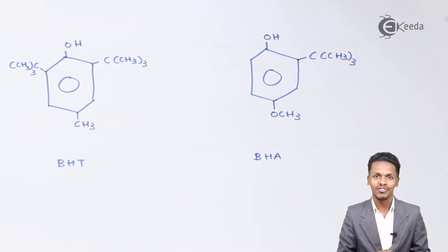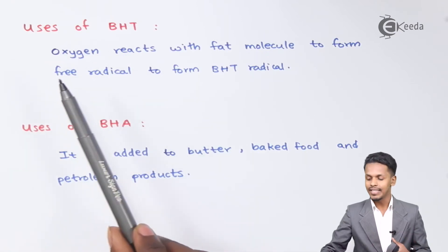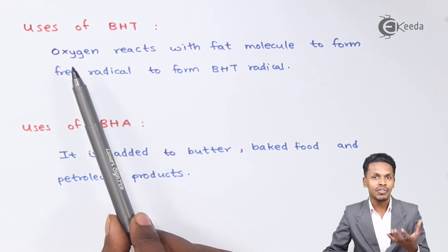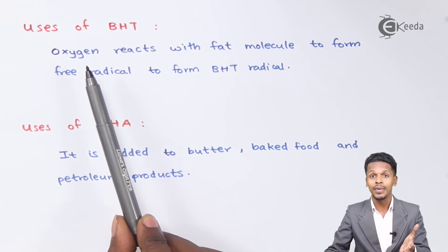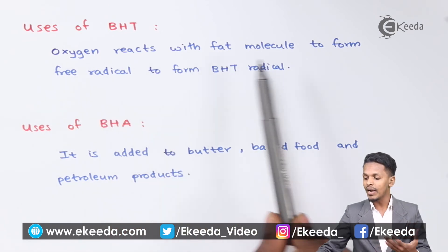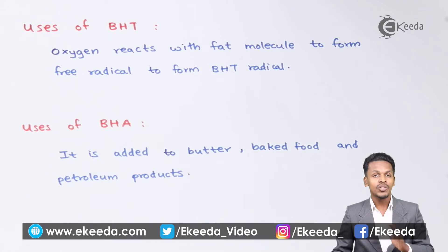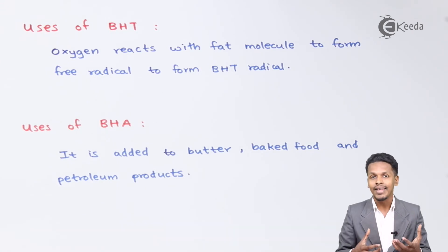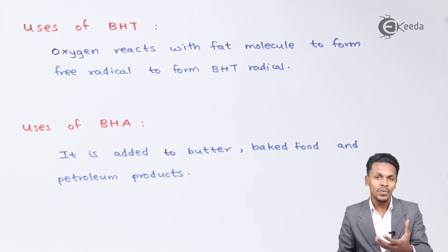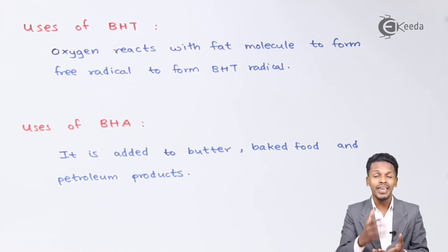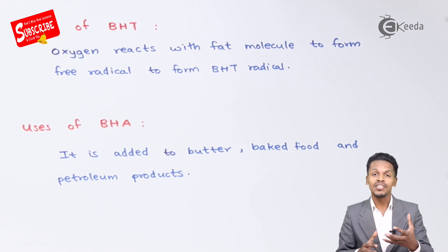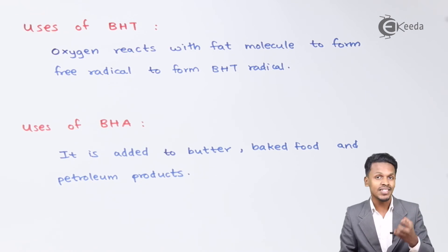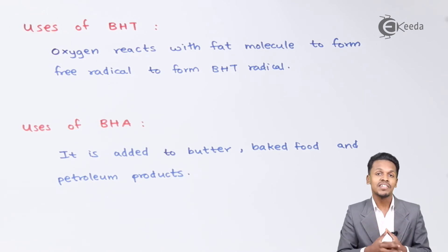Now let us understand the uses of BHT and BHA. The oxidant reacts with the fat molecules present in the food, making the food very stinky after a while if we are not adding a food preservative. When BHT is added, it reacts with the fat molecules to form stable BHT radicals, which are very stable and thereby do not react with other fat molecules. BHT consumes the oxygen and thereby controls the oxidative deterioration of the fats.